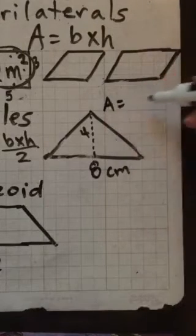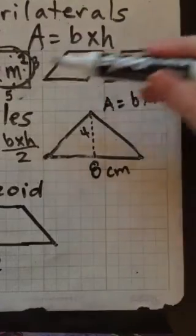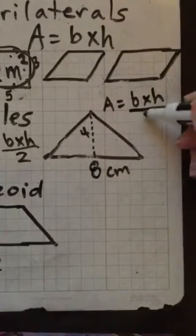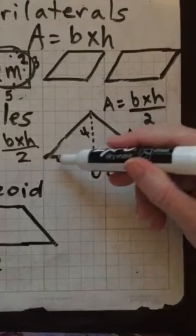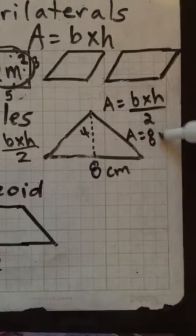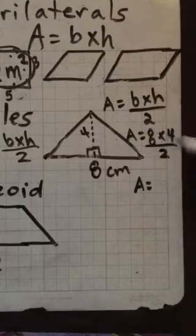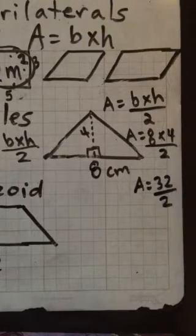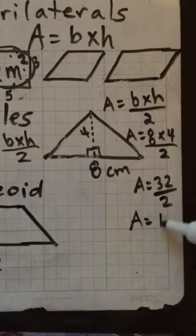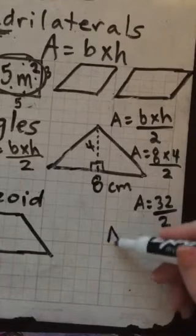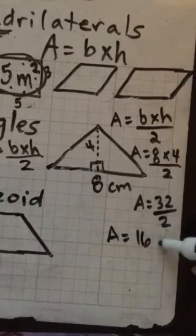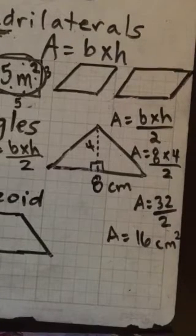To find the area, you would do area equals the base times height, just like the quadrilaterals, but we're going to have to cut it in half. Because a triangle, there's two triangles in one rectangle. So area equals the base, the bottom is 8, and the height of it is 4. And I need my little 90 degree angle here so you know this is the height. And then we have to cut it in half. So area equals 8 times 4 is 32, and then we're going to cut that in half. So our final answer would be area equals 16 centimeters squared. And that would be your answer.